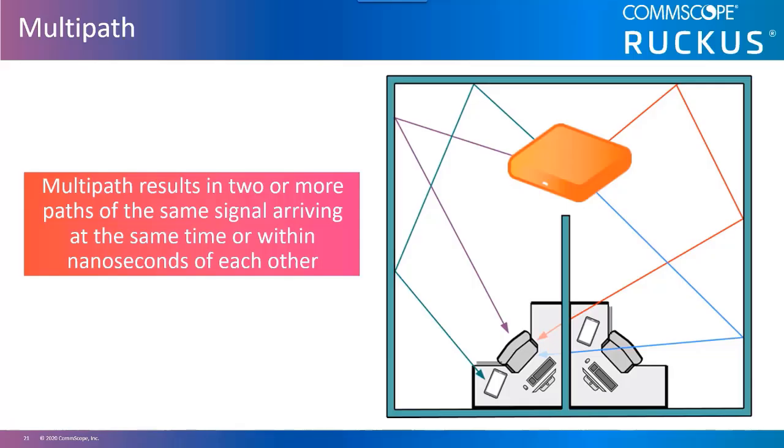Multipath results in two or more paths of the same signal arriving at a receiving antenna at the same time or within nanoseconds of each other. Because of the natural broadening of the waves, the propagation behaviors of reflection, scattering, diffraction, and refraction will occur.